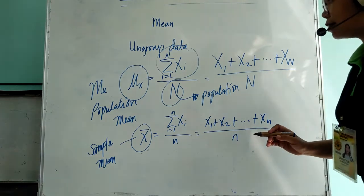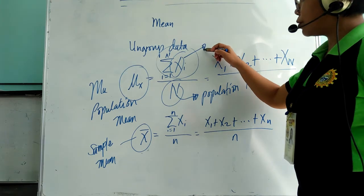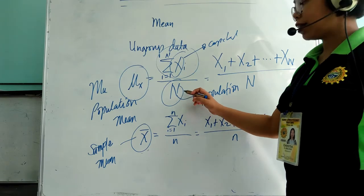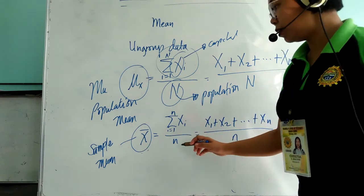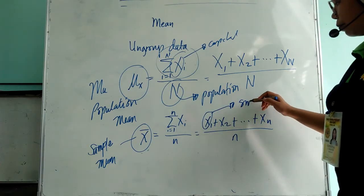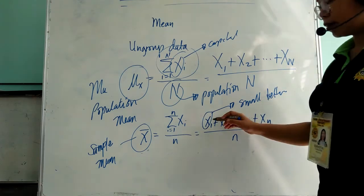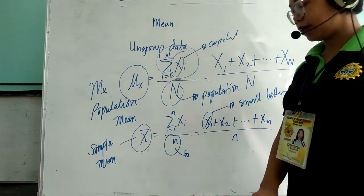So if you notice, in the population mean we use capital letter for the variable X and for the N. Then for the sample, we use the small letter for the notation of its variable and the small letter n.